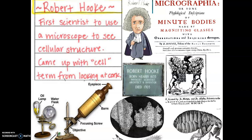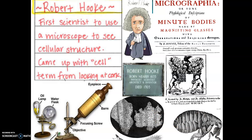His other big claim to fame is that he gets credit for giving cells their name, and he gave them that name because of what he looked at — he looked at plant cells. Plant cells are more boxy than animal cells, and they reminded him of the rooms that monks live in in a monastery, and those rooms just happen to be called cells.